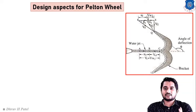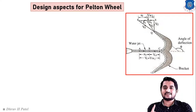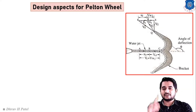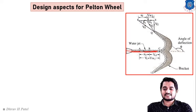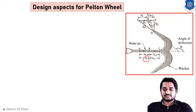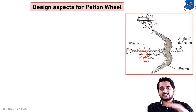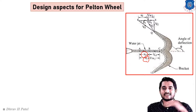Let us understand the design aspects of the Pelton wheel turbine. First, we have to revise the velocity triangle for the Pelton wheel turbine. Remember that for the velocity triangle, a double hemispherical blade will be there and the jet acts at a tangential direction to the blade. From the sketch, first we draw v1, the jet velocity, then u1, the blade velocity — both are in the same direction and on the same line.